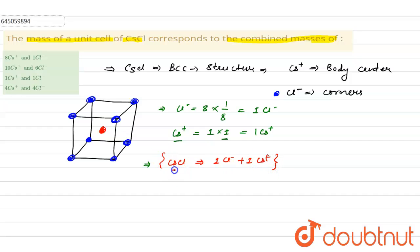So mass of the cesium chloride is the combination of one chloride and one cesium. Now let's see in the options. First option is wrong, second option is also wrong, third option is the correct answer, so this is our answer.